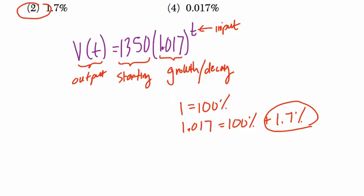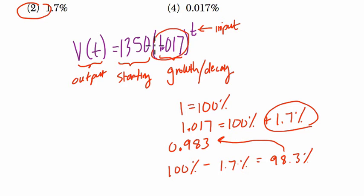A decay function, you might see something like, well, let's say we're losing 1.7%. That would be 0.983, right? How do I know that? Well, this is 100% minus 1.7%, which is equal to 98.3%, and that is 0.983. So you would see that here in the parentheses.